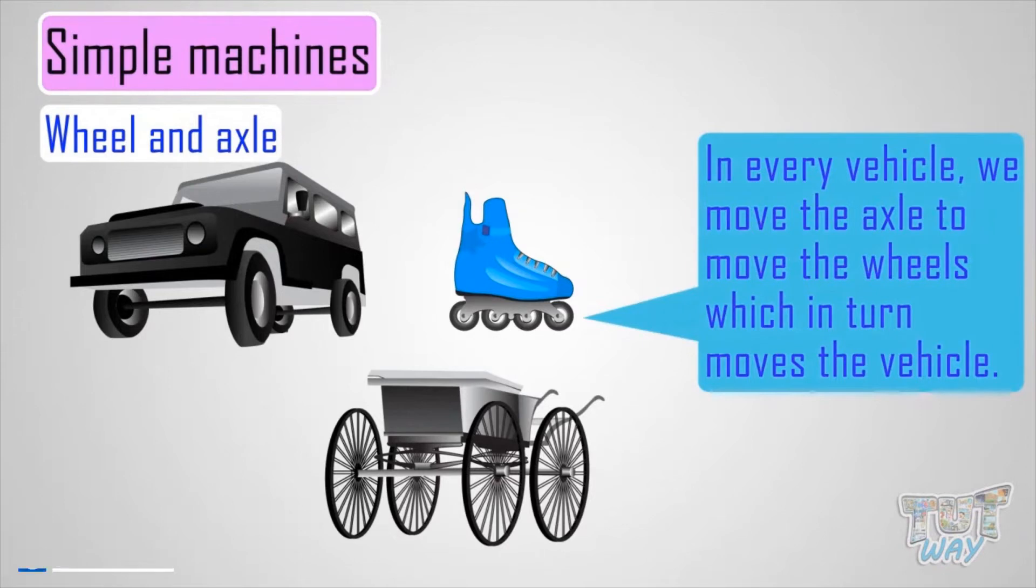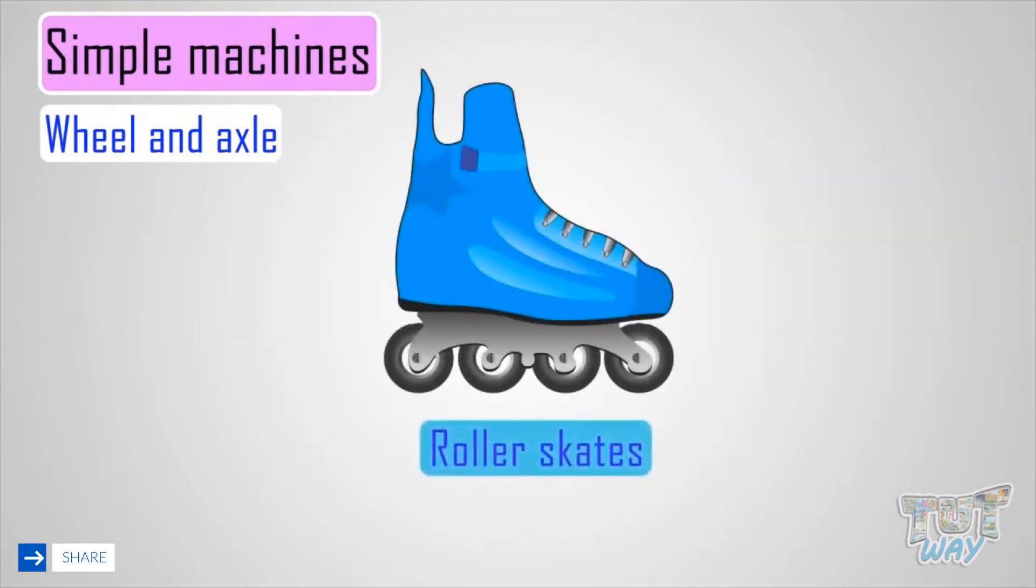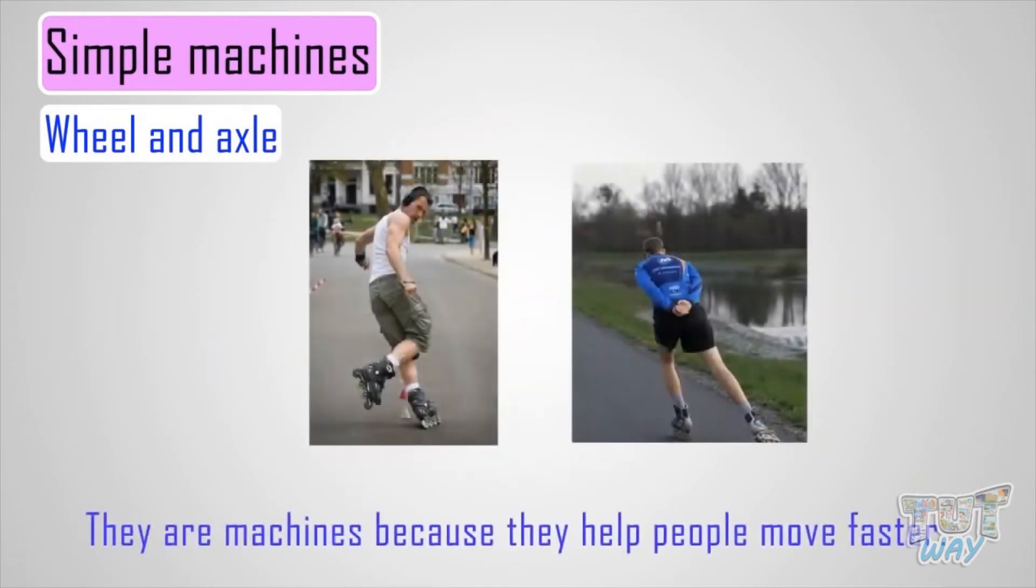Let's see some examples. Roller skates are made up of many wheels and axles. They are machines because they help people move faster. So you can find a wheel and axle used almost everywhere.